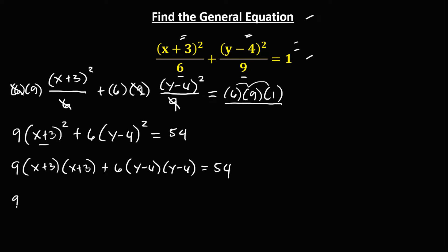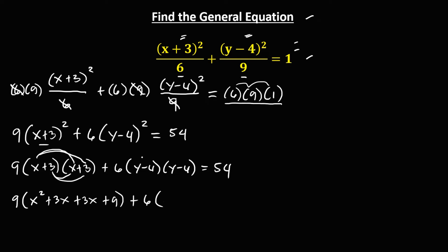Then, using the FOIL method, we have 9 times: x times x is x squared, and x times 3 gives another x squared term. Then plus 6 times: y times y is y squared, y times negative 4 is negative 4y, negative 4y again, and negative 4 times negative 4 is positive 16, then equals 54.